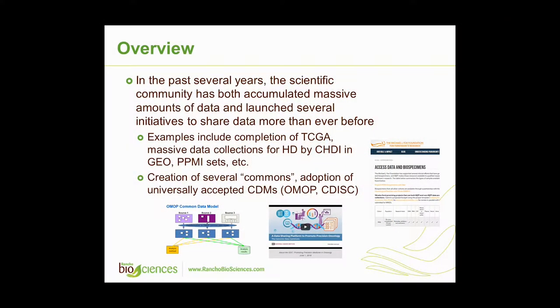Some examples worth mentioning: TCGA — that particular dataset is near completion, and genomic commons have been implemented to make the data more available and searchable. There is also a huge amount of data generated by CHDI, the Huntington's Disease Foundation, releasing sequence data into GEO for everyone to use. The Parkinson's disease dataset is available as well, among many others.